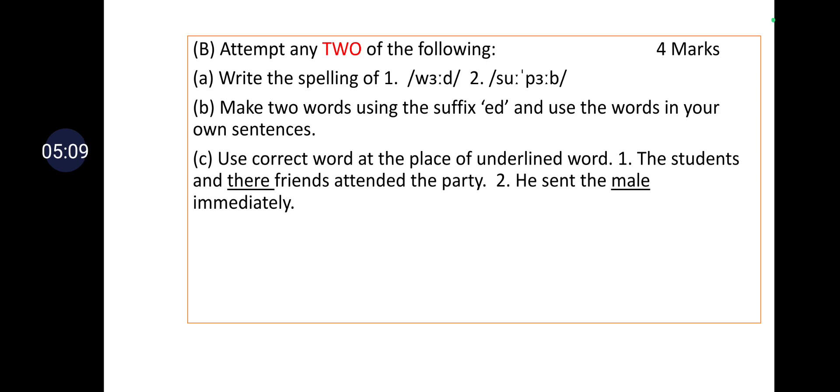Be: attempt any two. Write the spelling of the word superb—this is the phonemic transcription. You should know all these 44 sounds that I have explained in the very beginning of this semester. You have to come up with that. Make two words using the suffix -ed and use the words in your own sentence. Then use correct word at the place of underline: the students and their T-H-E-R-E. So here T-H-E-I-R is needed. Then he sent the mail M-A-L-E—actual spelling M-A-I-L has to be written. Such things you have to come up with.